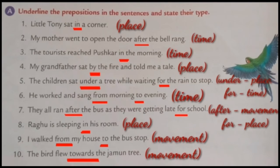Sixth one: He worked and sang from morning to evening. Here, the answers are 'from' and 'to' — both are prepositions of time. Seventh one: They all ran after the bus as they were getting late for school. Here, the answers are 'after' and 'for'. 'After' is a preposition of movement and 'for' is a preposition of place.